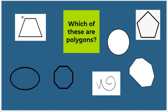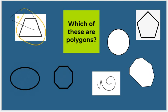Is this one a polygon? Is it a closed shape with straight sides? Yes it is, so we're going to call this one a polygon. How about this one? No, it's not — think to yourself why. Because it does not have straight sides; this is a curved shape, so this is not a polygon.